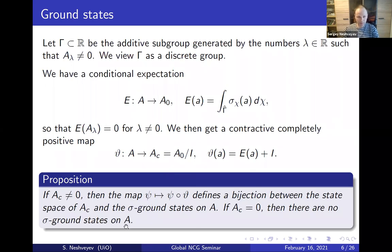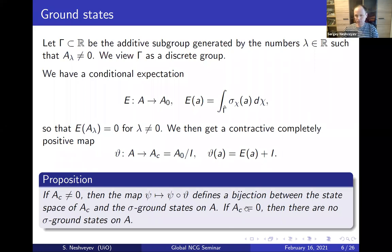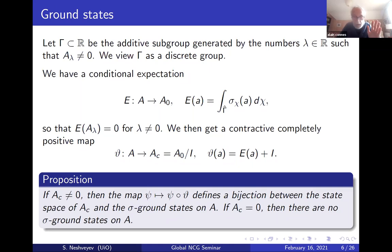From this we get a contractive completely positive map from our C*-algebra onto the crystal, which is the composition of this conditional expectation with the quotient map. The result, which follows quickly from the definition, is that we get a one-to-one correspondence between ground states and states on A_c: if the crystal is nonzero, then composing any state on A_c with this CP map gives a ground state on the original algebra, and every ground state arises this way. If the crystal is zero — which happens when the action is saturated — then there are no ground states.